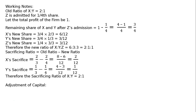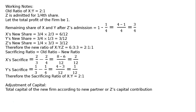Adjustment of capital. Capital adjustment is given — you have to read it out first. F part: by bringing in or paying out cash, the capitals of X and Y are to be made proportionate to that of Z on their profit-sharing basis. Total capital of the new firm according to Z's capital contribution is equal to Rs 40,000 multiplied by the reciprocal of Z's share, that is 4 upon 1, equal to Rs 1,60,000.